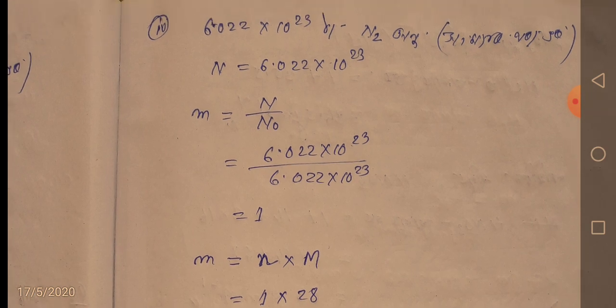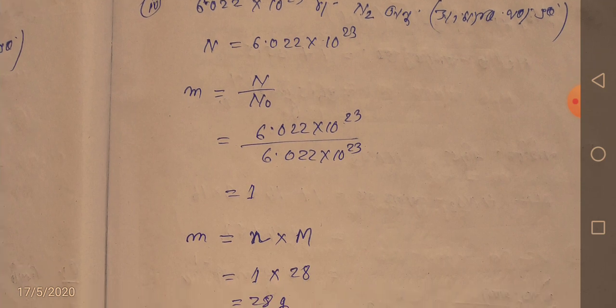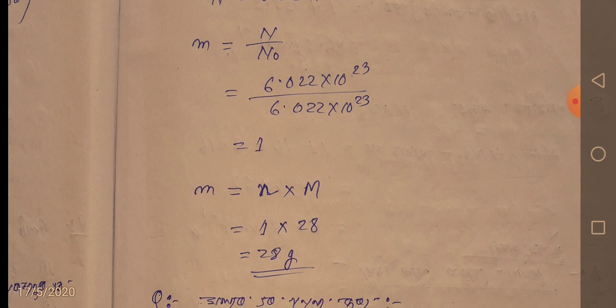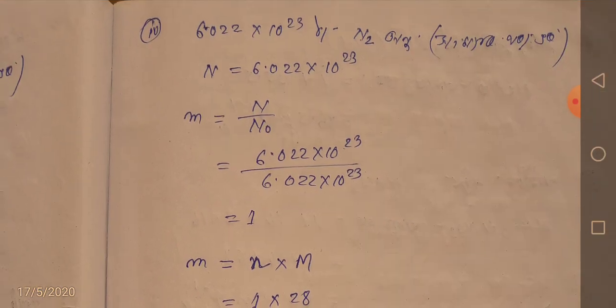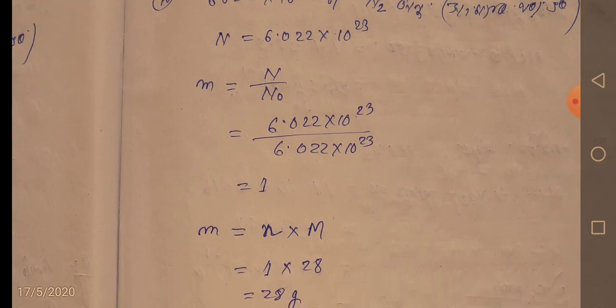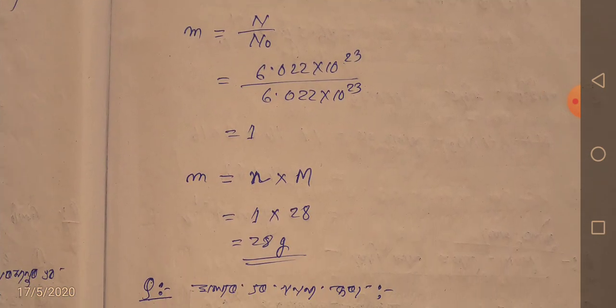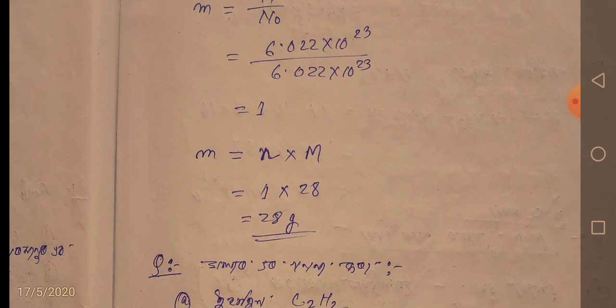The Avogadro number is 6.022 into 10 to the power 23. From the question, m equal to n by N₀. We got 1 mole. I will add small n to 1, so I will add m to 1 and then m to 2. If we add m to 2, so we add m to 28 grams. The molar mass of N2 is 28 grams.